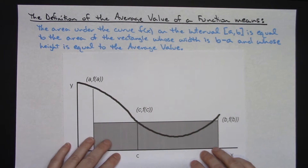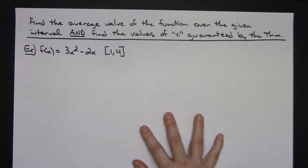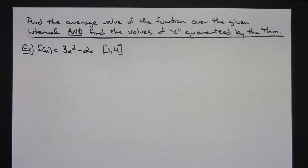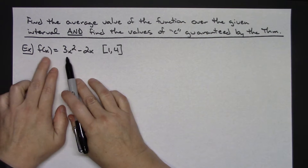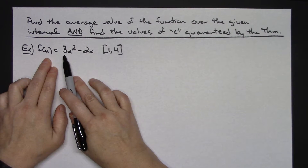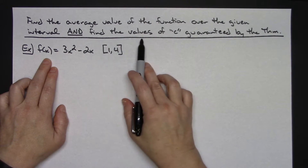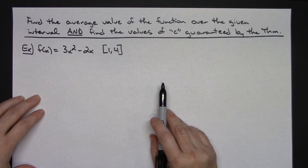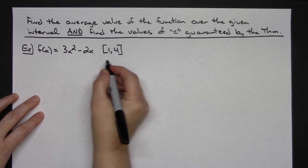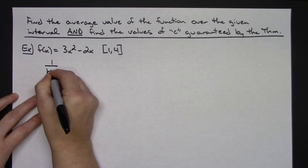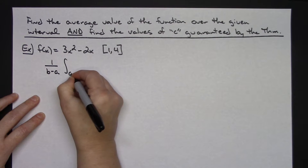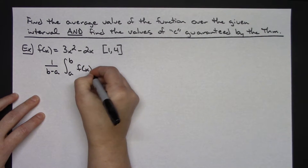So let's now go to an example problem where we actually work one out. We'll find the average value of the function and then we'll also find the values of c for which it's guaranteed by the theorem. Let's suppose that we've got a function f(x) equals 3x squared minus 2x and we're looking at this on the closed interval from 1 to 4. First thing we're going to do is find our average value. The average value is given by 1 over (b minus a) of the integral from a to b of f(x) dx.